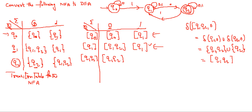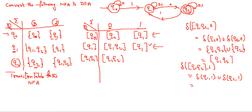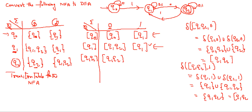Now check for input symbol 1. Delta of {Q1, Q2} on 1 equals delta(Q1, 1) union delta(Q2, 1). Applying 1 on Q1 gives Q1 only, and applying 1 on Q2 gives {Q1, Q2}. After combining, you get {Q1, Q2} — the same state again. So you write {Q1, Q2} for both inputs.